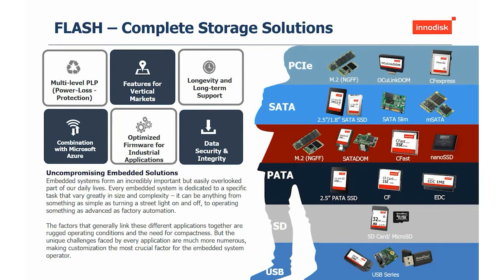Looking at our products, we start with flash products. We have a complete storage solution including PCIe, SATA, BATA, SD, and USB devices. For each device, we have different kinds of power loss protection — meaning if power is completely lost, your data remains secure. We have different features for vertical markets including longevity and long-term support. We work with tier-1 vendors like Samsung and Kioxia. We also have key partnerships — for example with Microsoft, where our device called InnoAge, an IoT device, works together with Microsoft Azure Cloud solutions. We can also do custom firmware, and we make most of our own firmware, giving us the advantage to make a device specifically tailored for one vertical market.